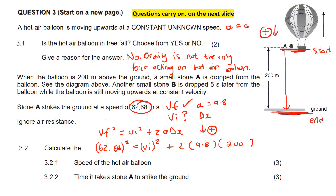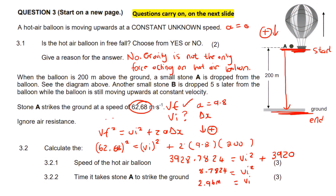Solving for initial velocity: 3928.0824 = vi² + 3920, giving vi² = 8.7824. Taking the square root gives 2.96 meters per second. They asked for speed so no direction is needed. That is the original velocity of the stone — but it also means it's the original velocity of the hot air balloon, since the dropped object has the same velocity as the object it was dropped from. So the answer is 2.96 meters per second.